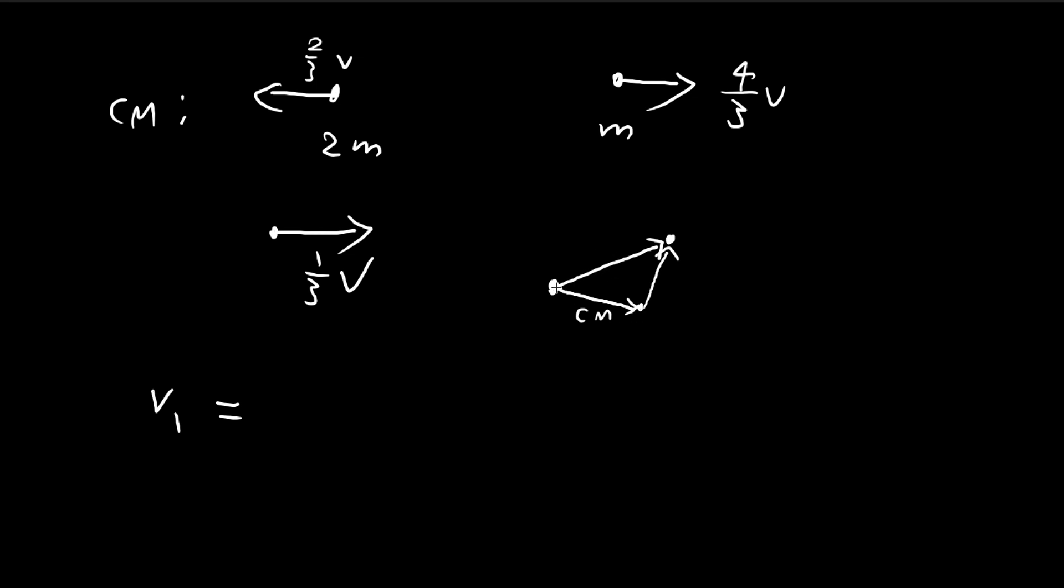And then if we take the derivative of these vectors, essentially we just get the velocities. So after taking the derivative, this vector essentially becomes the velocity of the CM. This becomes the velocity with respect to the CM. And then this becomes the velocity you see in the lab frame.